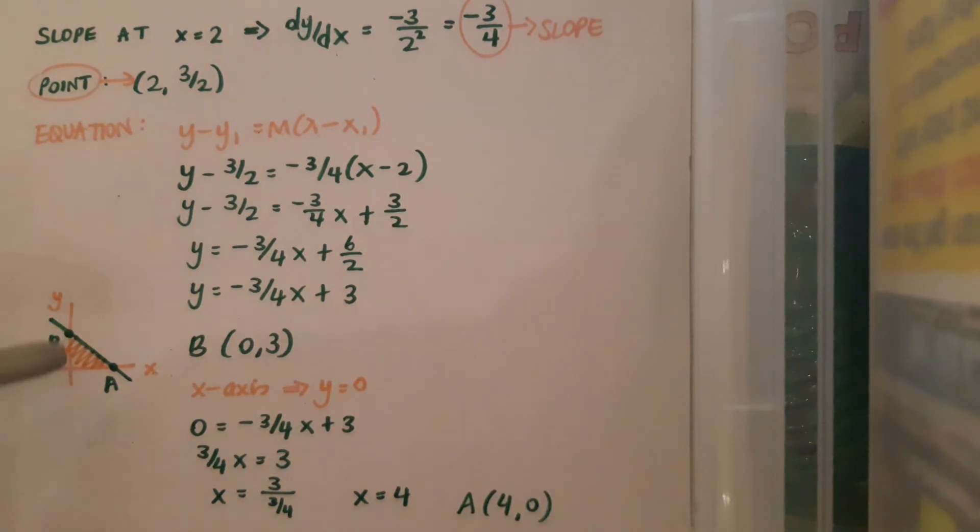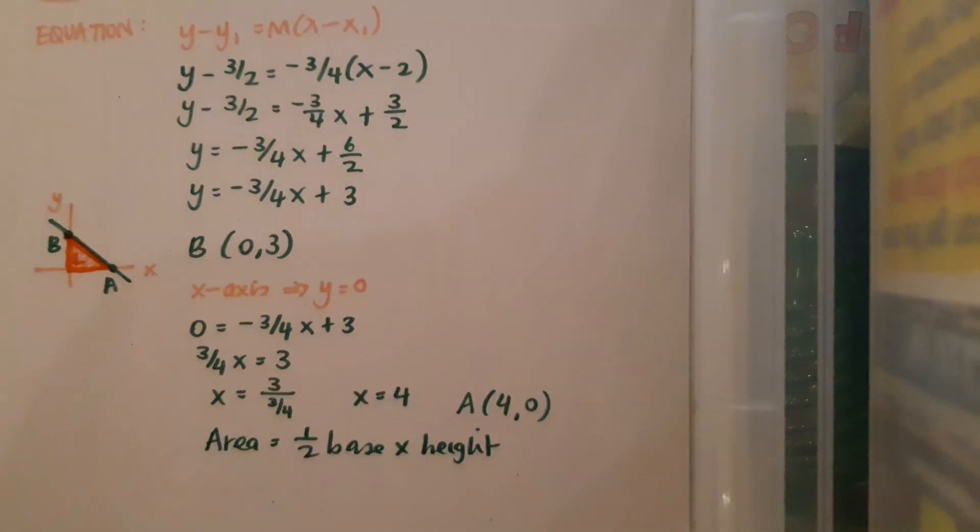Now I'm being asked to find the area of the triangle here that's been created by the x and the y-axis and the line. So obviously the x and y-axis are perpendicular, so I can just use the straight up formula for the area of the triangle of a half the base times the perpendicular height.